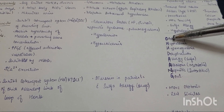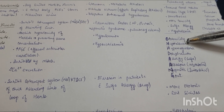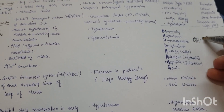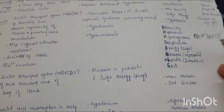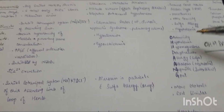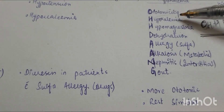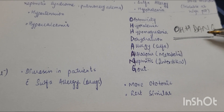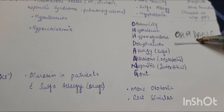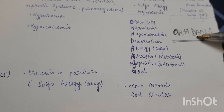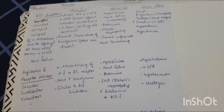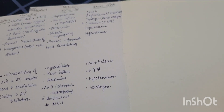The adverse effects of loop diuretics are remembered with the mnemonic O DANG: O for ototoxicity, H for hypokalemia, H for hypomagnesemia, D for dehydration, A for allergy (sulfa), A for alkalosis (metabolic), N for nephritis (interstitial), and G for gout.